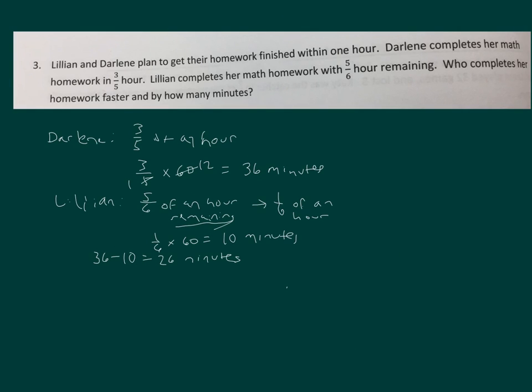For the bonus question, 26 minutes as a fraction of an hour. That would be 26/60. Divided by 2, divided by 2, equals 13/30 of an hour faster.